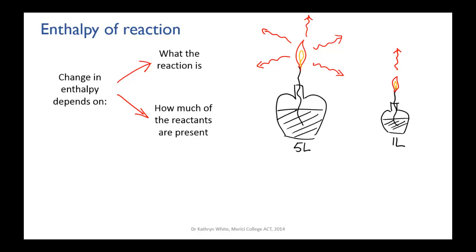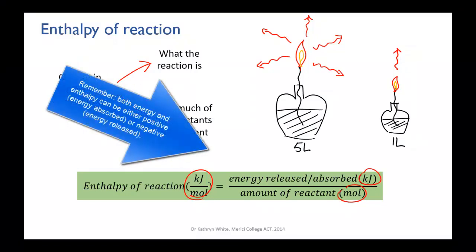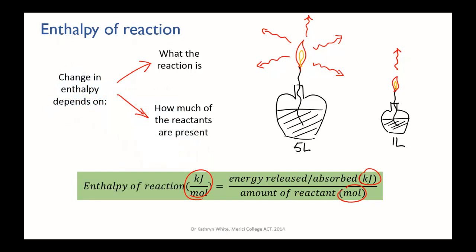The way we express the enthalpy for a particular reaction is: the change in enthalpy, in kilojoules per mole, equals the amount of energy released or absorbed in kilojoules divided by the amount of reactant in moles. The energy is in kilojoules — enthalpies of reaction tend to be quite large values, so we use kilojoules rather than joules. The value can be positive if the energy was absorbed, or negative if it was released.